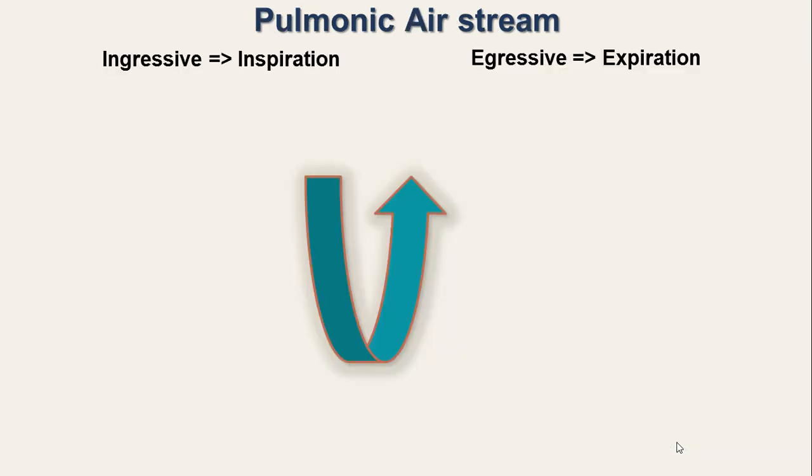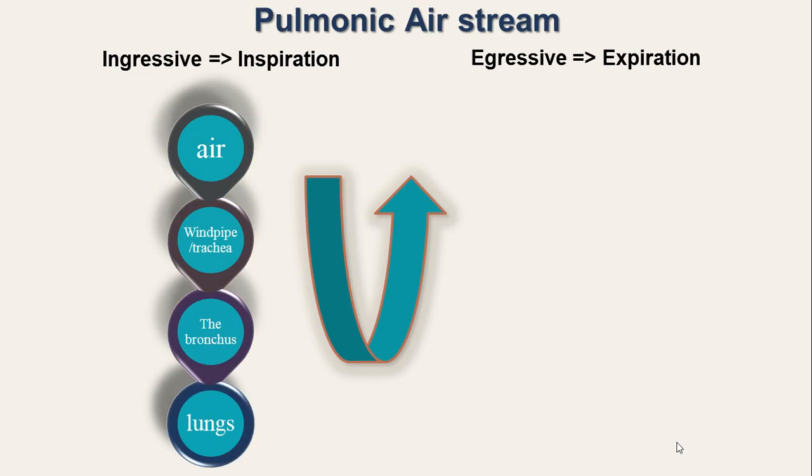The lungs are soft bodies situated on either side of our chest. The lungs receive oxygen through the two bronchi. The two bronchi join together into one bronchus above the lungs, and the bronchus joins the windpipe or the trachea.